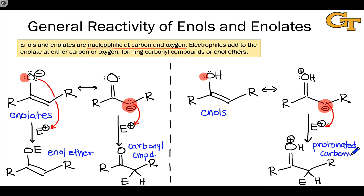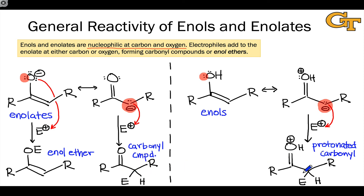Under catalytic conditions or basic workup, this oxygen will be deprotonated to give the neutral carbonyl compound product. This shows us two different ways to get to a substituted carbonyl compound from either an enol or enolate intermediate.